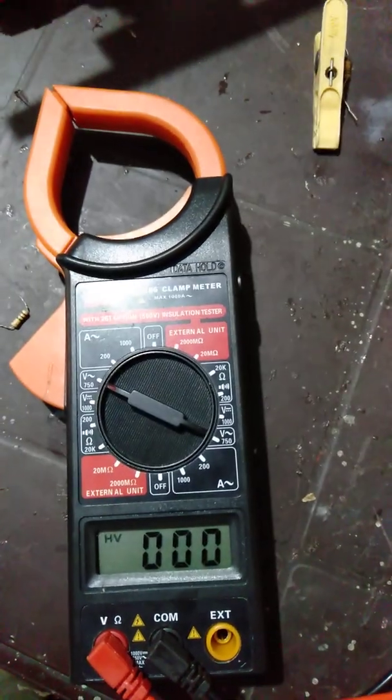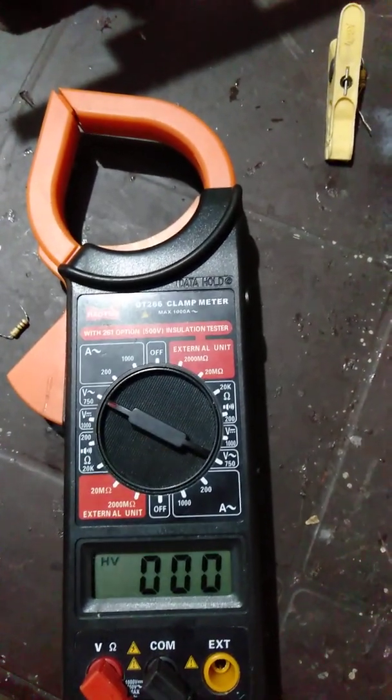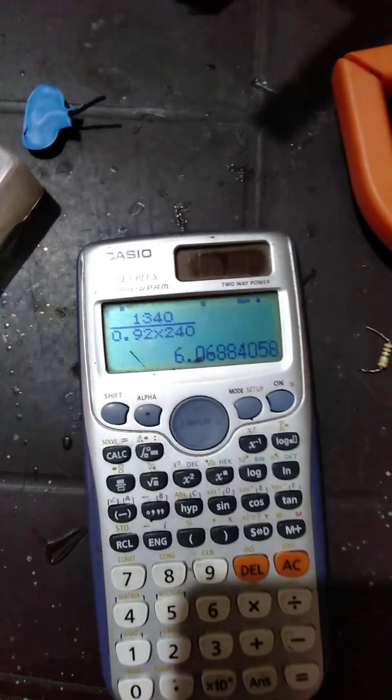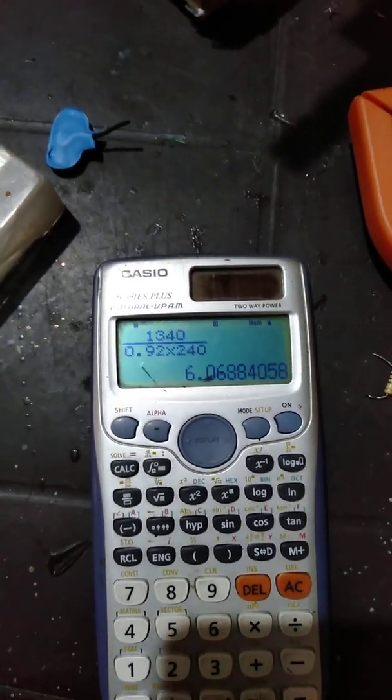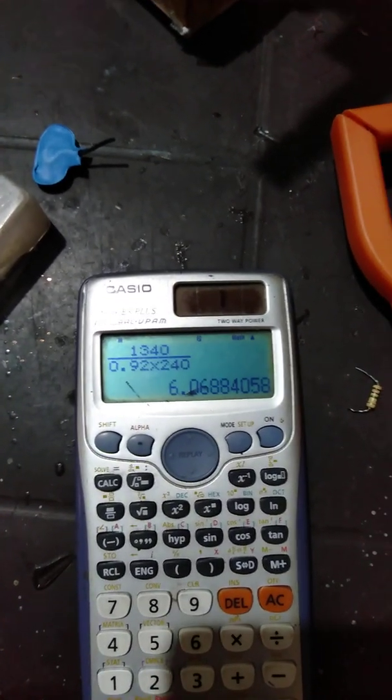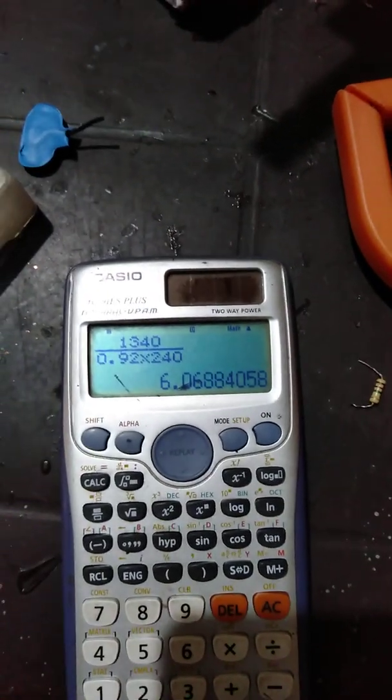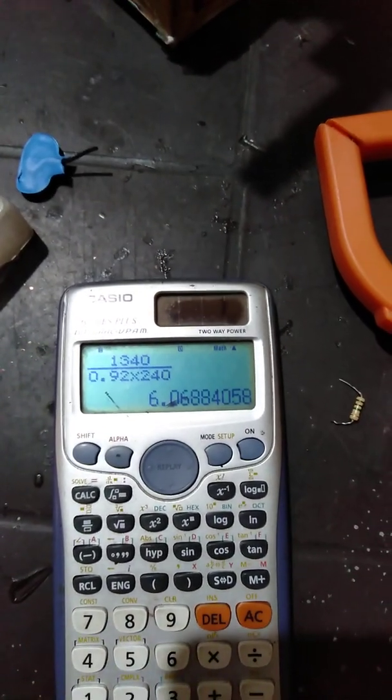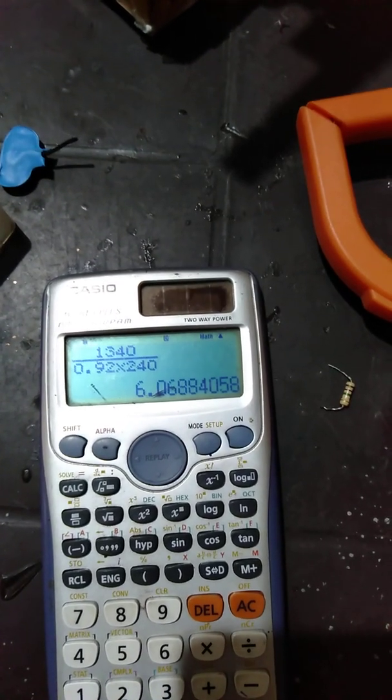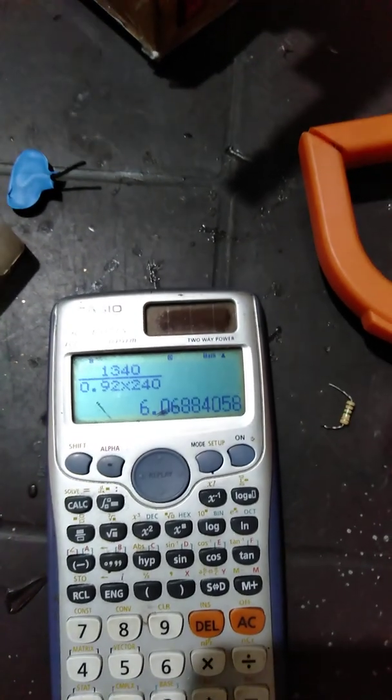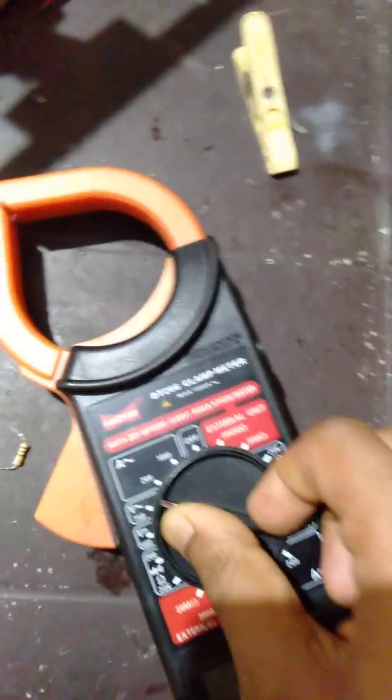For this, we're going to test on our air conditioner. Going by the calculation, our air conditioner is 1340 watts, and considering the power factor to be 0.92 as it is running right now, and the voltage right now is 240 volts, it should be measuring around 6.06 amperes or around 6 amperes.